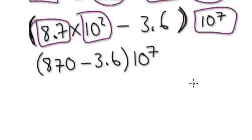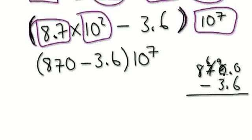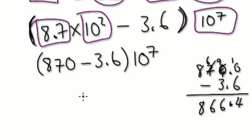So now, out here somewhere, do this: take away 3.6 — so really you're taking away this. You've got to borrow here: 6, 9, 1. So 9 take away 3 would be 6.6, 8. So this thing here would be 8.6, 6.4 times 10 to the power of 7.